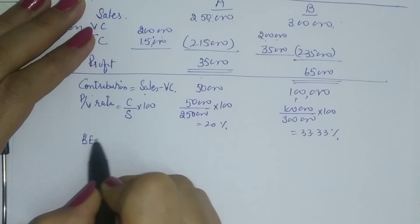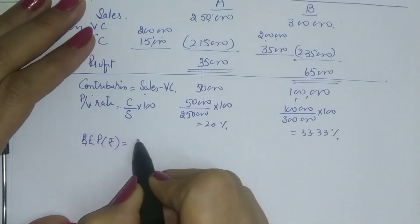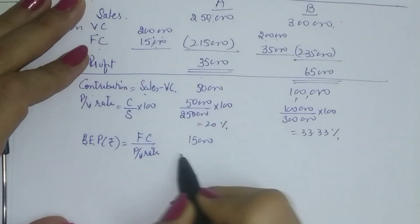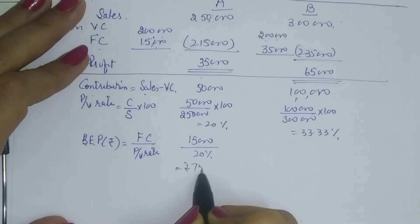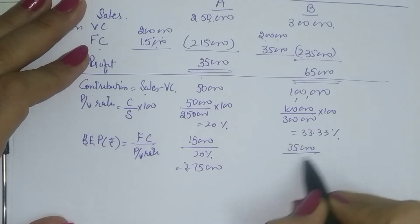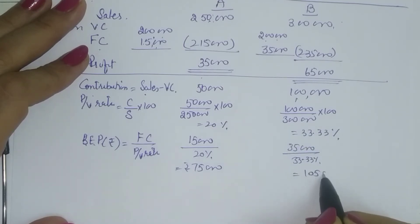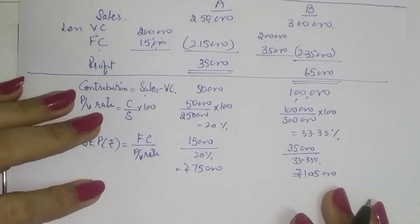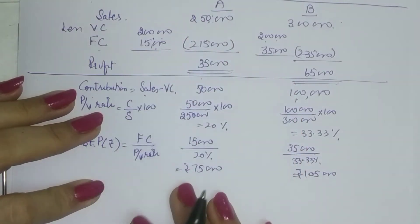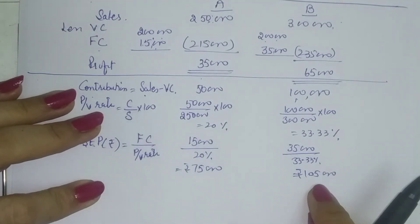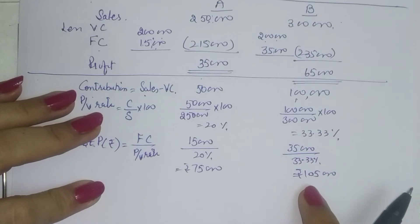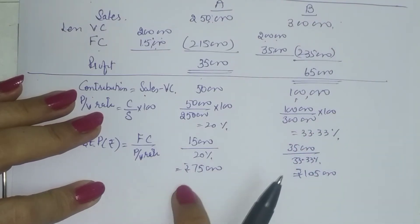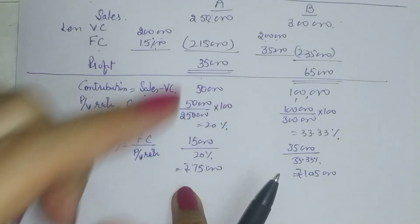Now let us calculate the breakeven point. BEP in rupees is fixed cost divided by PV ratio. For A: fixed cost is 15,000 divided by 20% = 75,000. For B: fixed cost is 35,000 divided by 33.33% = 1,05,000. A basic comparison shows that if your product is sold up to 1,05,000 rupees, it is better to go with A because it has a lower breakeven point and lower fixed cost — you start making profit from a lower level, though every additional sale contributes only 20%.